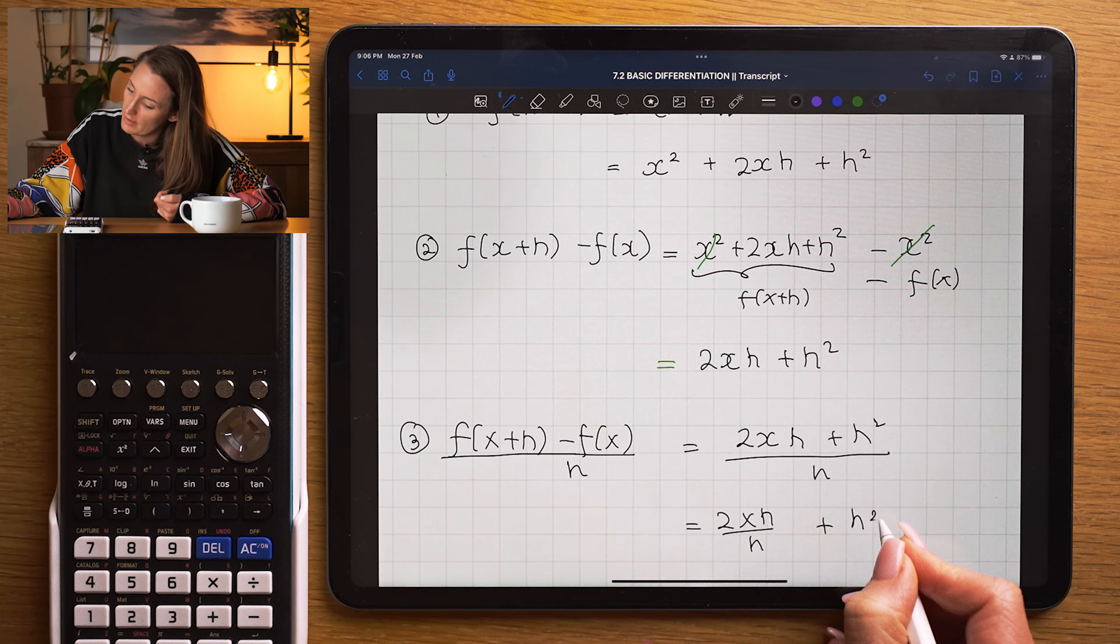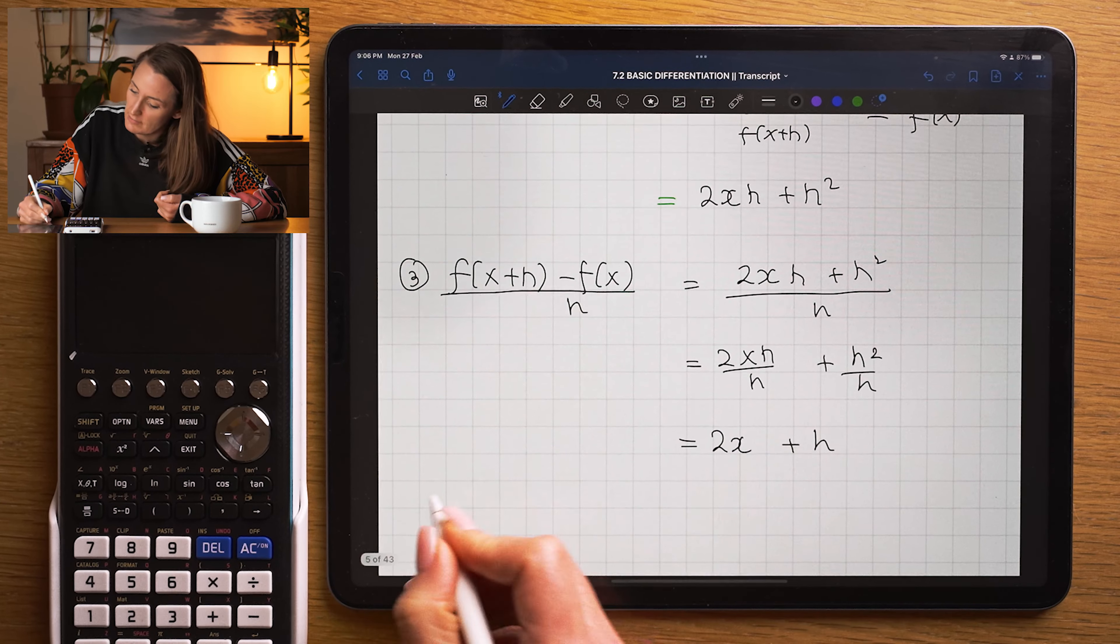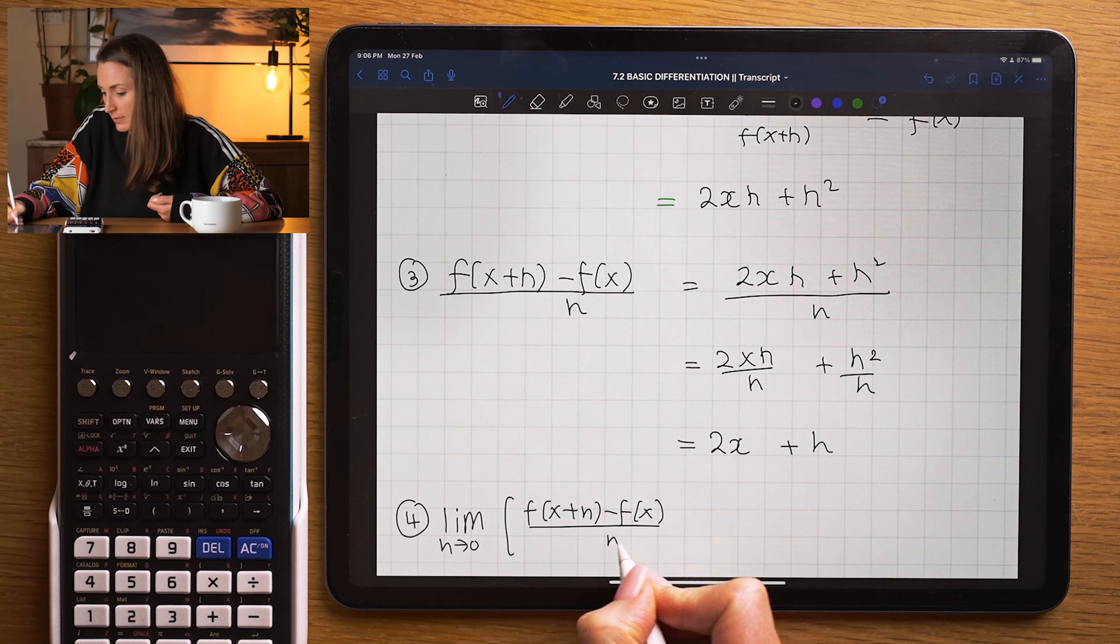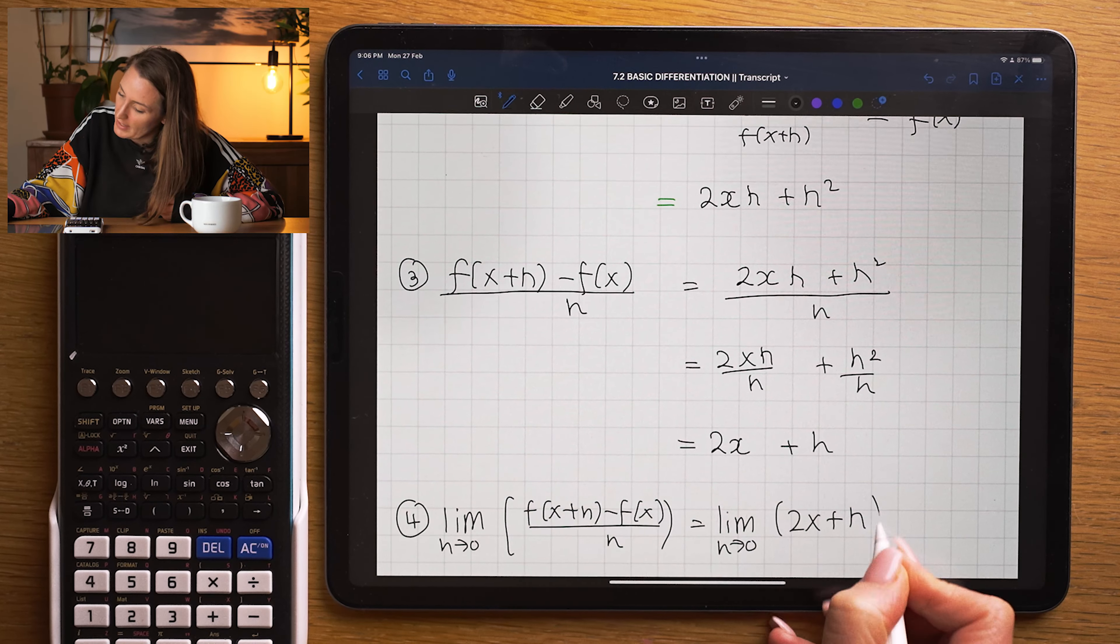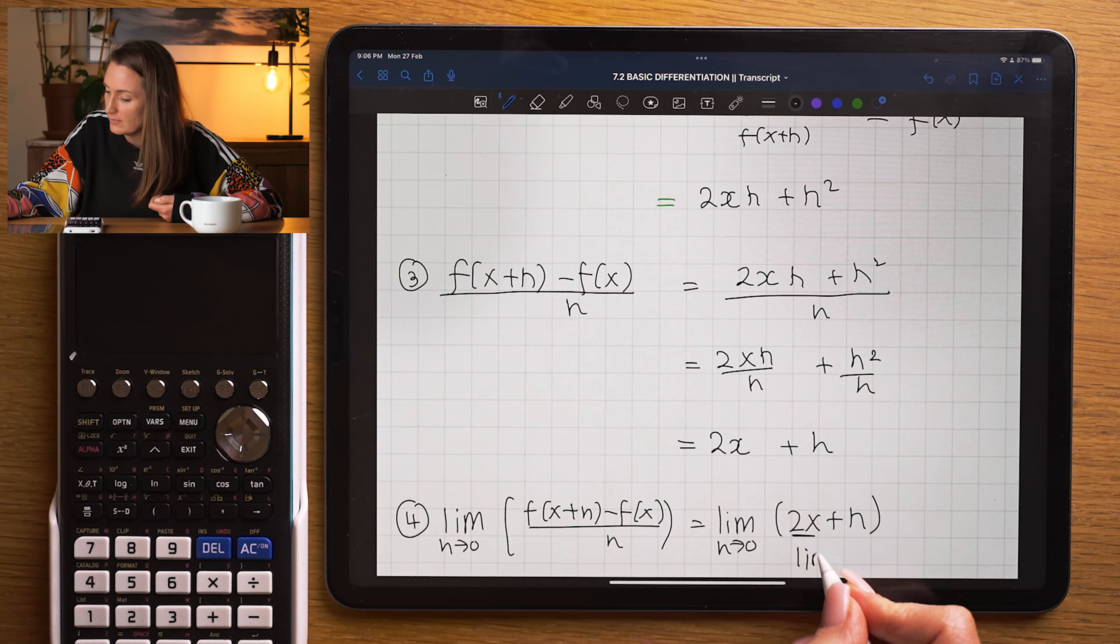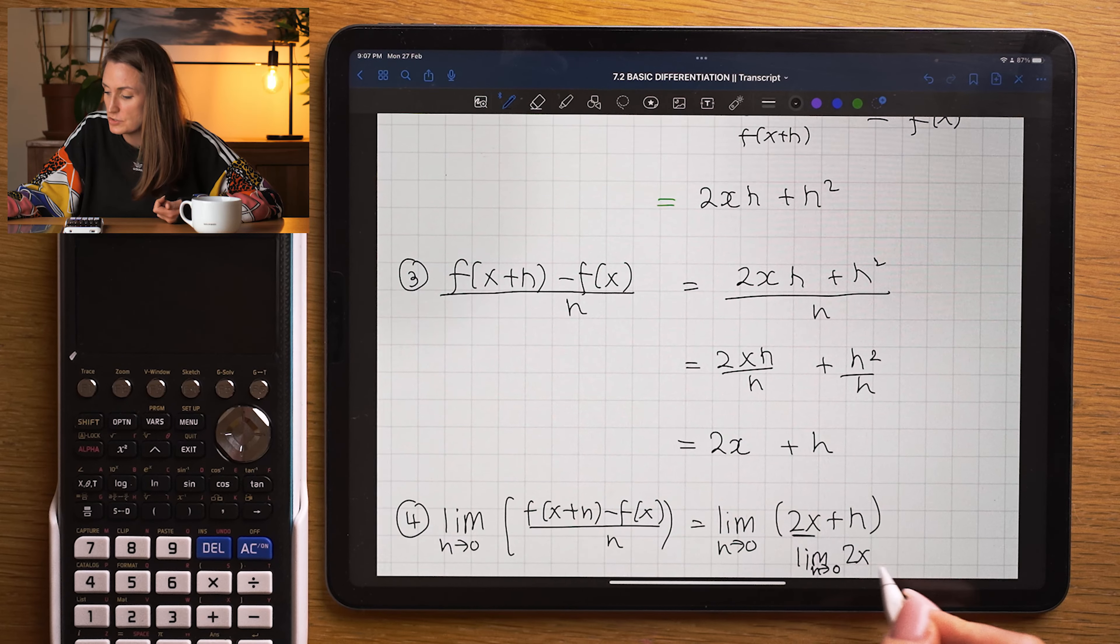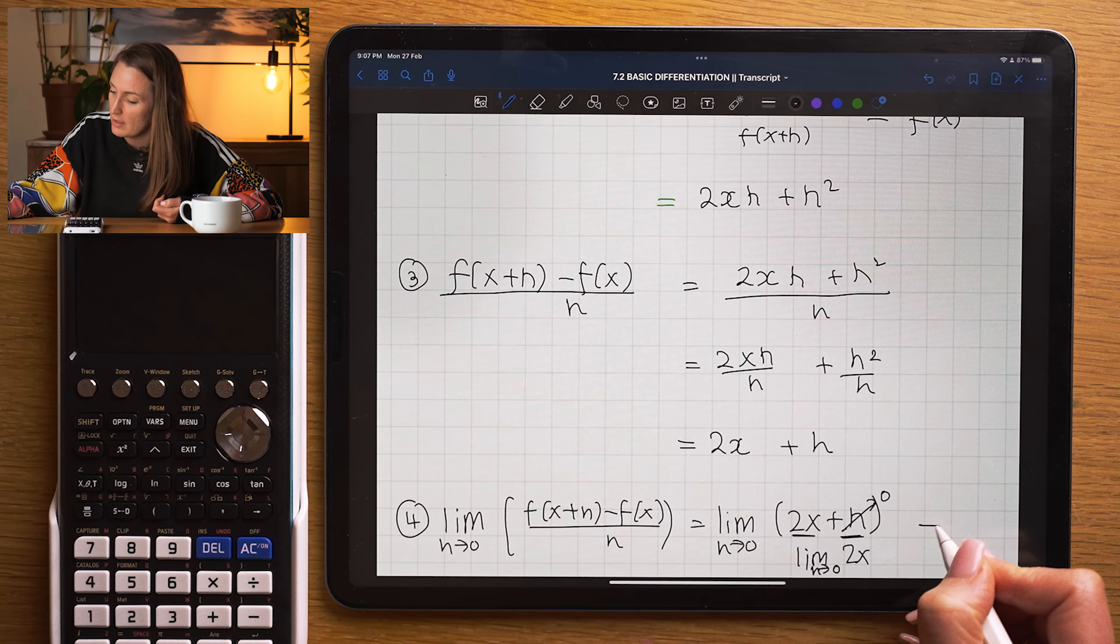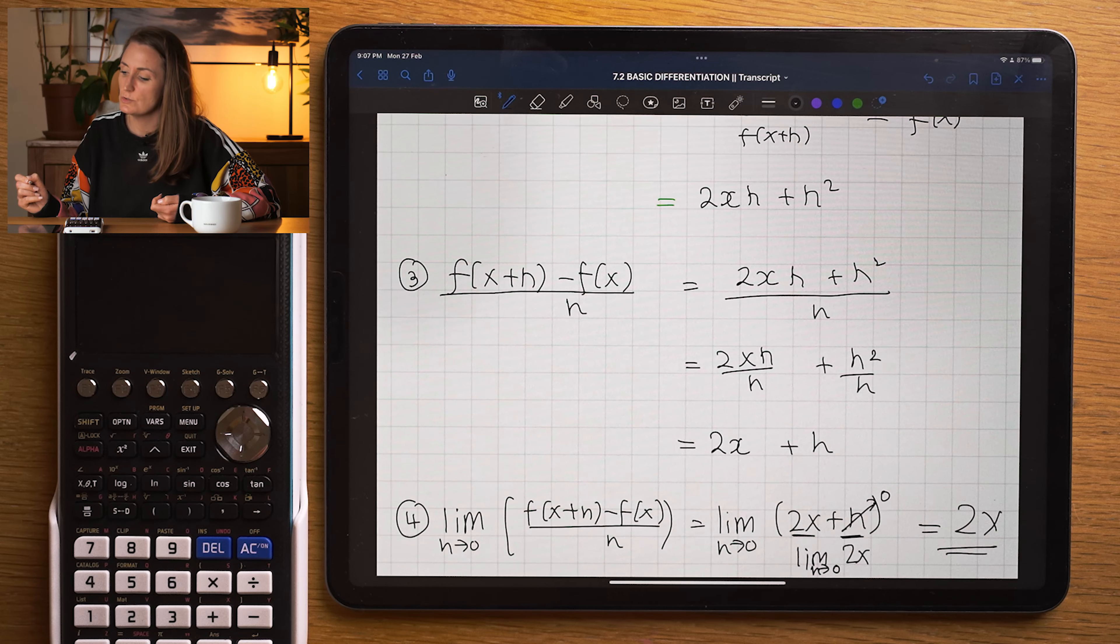which is going to leave me 2x plus h. Step four, I'm going to take the limit of that whole expression, which is taking the limit as h tends to zero of 2x plus h. Now 2x doesn't depend on h, so for example, if I was taking the limit as h tends to zero of 2x, it's just going to be 2x, it's not changing. But if h gets really, really small, that is going to change to zero here. So the answer to my limit is going to be 2x.